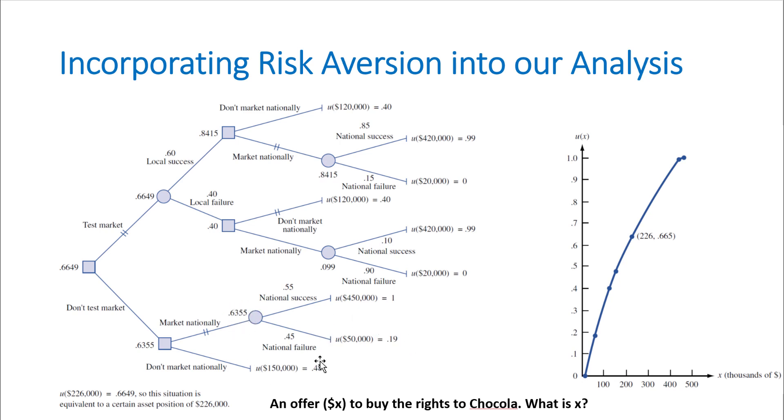Then between these two values, I mark this one because this is the larger value. I do that for all of these, doing the backward method, and this time I noticed that the best path here in the decision tree is to actually do the test market. If you see a local success, market it nationally, and if you see a local failure, then don't market it. So this is when we incorporate the utility function of an individual or of a company into our decision tree.